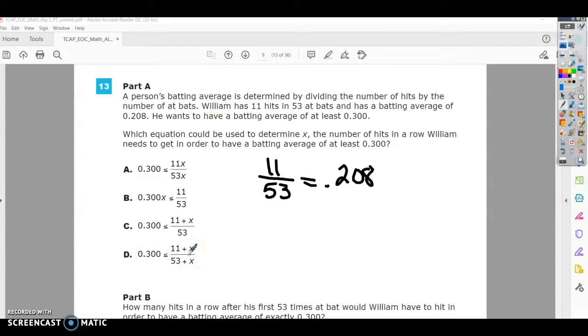If you look at the first one, it says 11 times X, so that's 11 times the number of times he hits - that one doesn't make sense at all. This one is putting the X times the batting average, so this one doesn't make sense either because it's not changing the number of times he hits.